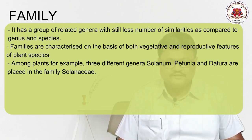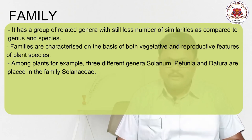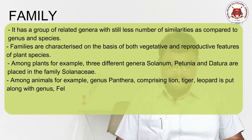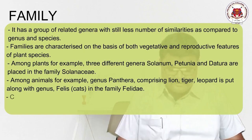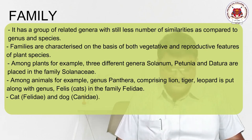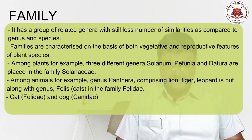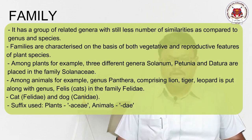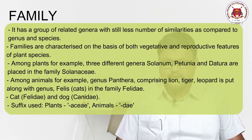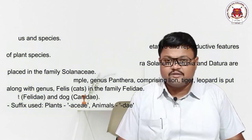For example, different genera such as Solanum, Petunia, and Datura share similar general characteristics and are placed in one family called Solanaceae. In animals, the genus Panthera (comprising lion, leopard, and tiger) is grouped with the genus Felis (containing various cats) into one family called Felidae. An important note: in plants, the family suffix is '-aceae', and in animals, the family suffix is '-dae'.